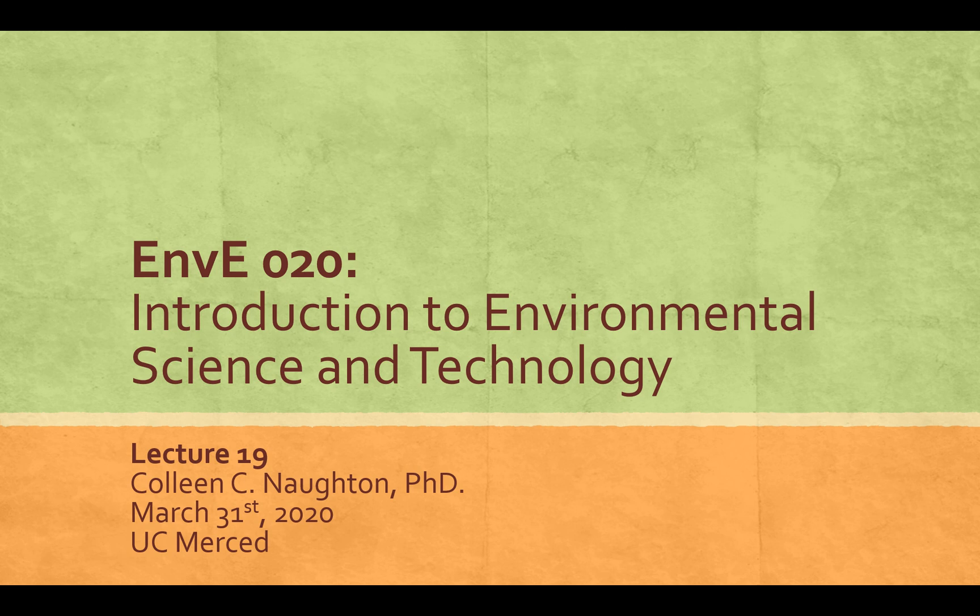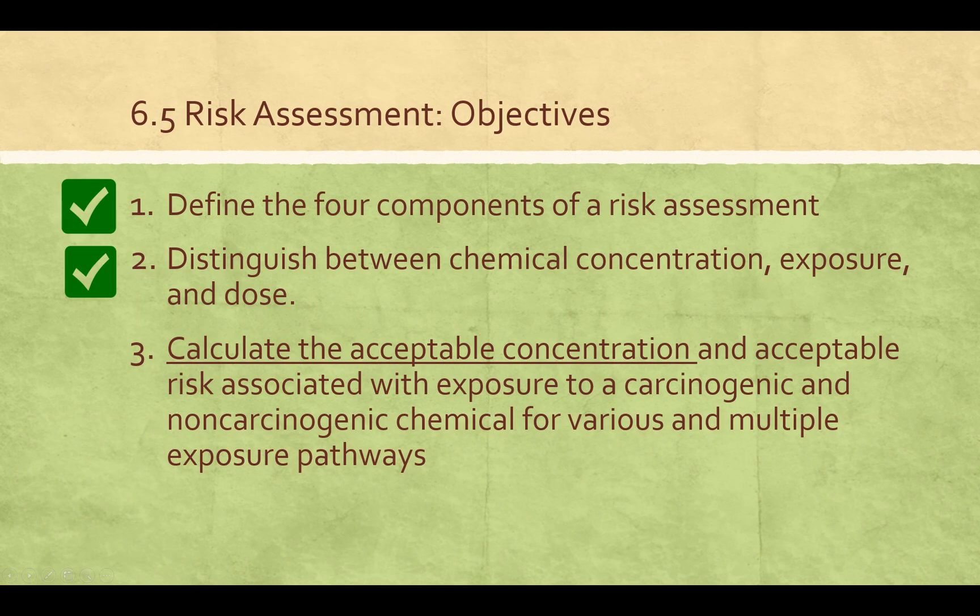This video will cover the last part of chapter six on risk assessment and is meant to be watched before our Tuesday lecture from 1:30 to 2:30 on March 31st. From last lecture we've gone over mostly objectives for section 6.5, and now for this lecture we'll be calculating acceptable concentrations given exposure to carcinogenic and non-carcinogenic chemicals for various and multiple exposure pathways.